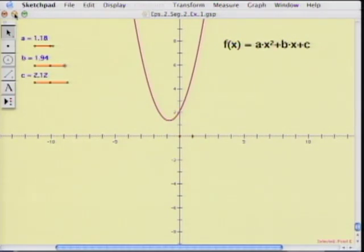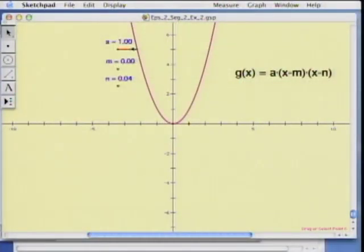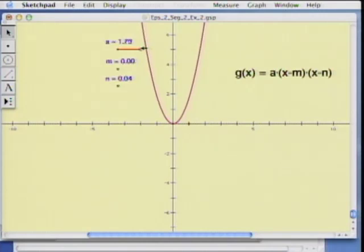The a(x - m)(x - n). Now in this case, the A, I'm leaving alone. Actually, A does exactly the same thing. It makes it fat or skinny. It's the same A that we were dealing with. But here's what I want to show you. M and n. M is zero. N is basically zero. Let me put it right back over there.